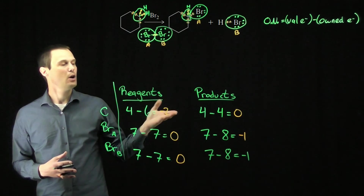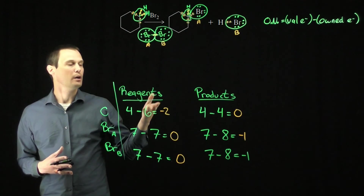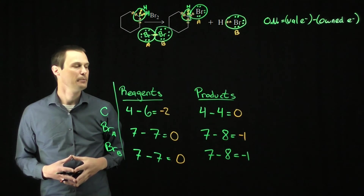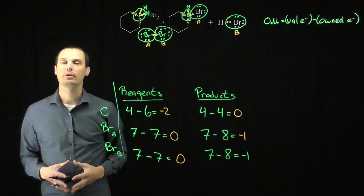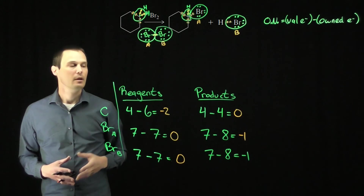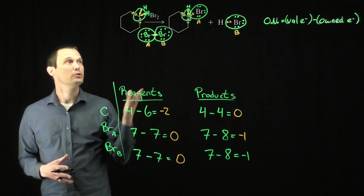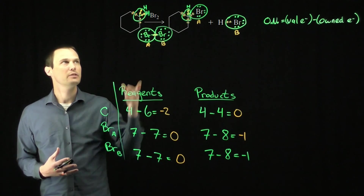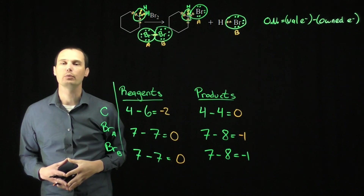Carbon has lost two electrons in order to go from the negative two oxidation level to the zero oxidation level. Bromine has gained one electron to go from zero to negative one. This does involve the loss and gain of electrons, so yes, this particular reaction is a redox reaction. Specifically, this carbon is being oxidized and the bromines are being reduced.